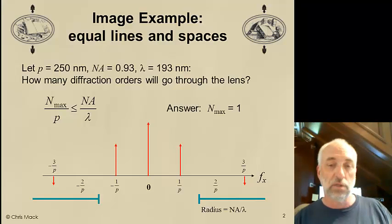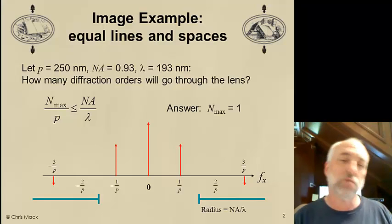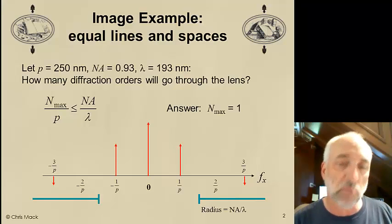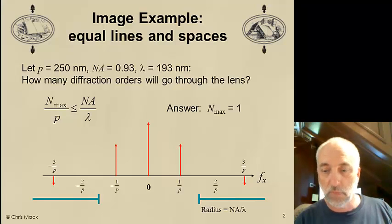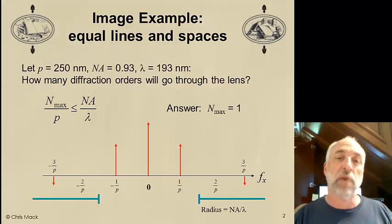And ask what is the biggest integer less than or equal to NA times the pitch divided by the wavelength. And the answer is 1. That is, the 0 and the plus and minus 1 orders make it through the lens, and nothing else does. So, this picture that I've drawn is reasonably accurate. Okay, now we know what portion of the diffraction pattern goes through.